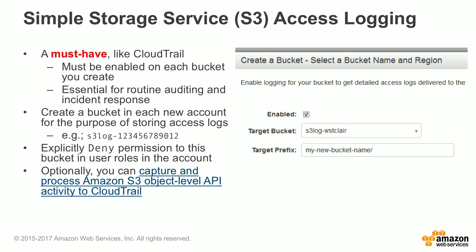S3 Access Logging is another must-have feature, much like CloudTrail. The difference is that you have to enable this feature on each bucket separately — it's off by default, and you can't enable it globally across all buckets in your account. So you want to make sure that you enable it on every bucket. This is essential for routine auditing and incident response. If you're trying to determine if somebody accessed data in one of your S3 buckets, you need to have this feature turned on.